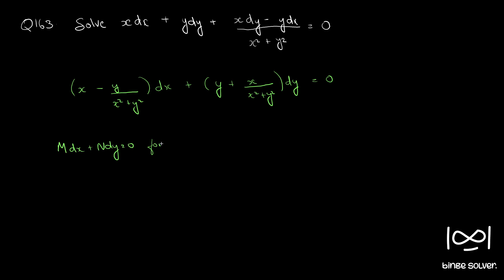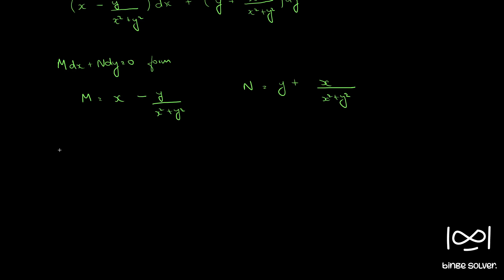So M is (x minus y divided by x squared plus y squared) and N is (y plus x divided by x squared plus y squared). Now we need to check whether this is an exact equation. We need to find ∂M/∂y.